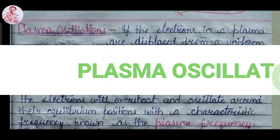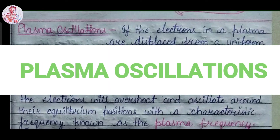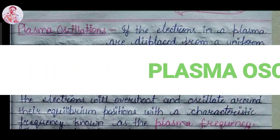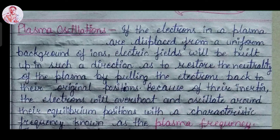Hello friends. In this video we will learn about plasma oscillations and plasma frequency, and we will derive the formula for plasma frequency. If the electrons in a plasma are displaced from a uniform background of ions, the electric field will be built up in such a direction as to restore the neutrality of plasma by bringing the electrons back to the original position. Because of their inertia, the electrons will overshoot and oscillate around the equilibrium position with a characteristic frequency. This frequency is known as plasma frequency and the oscillations are known as plasma oscillations.